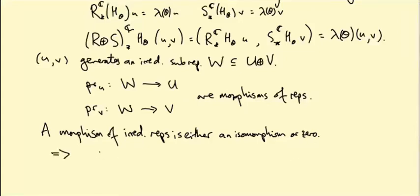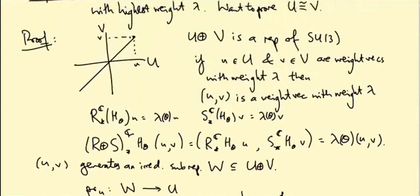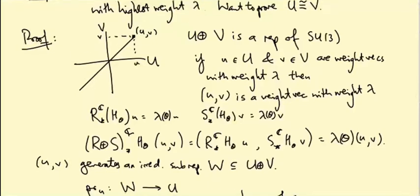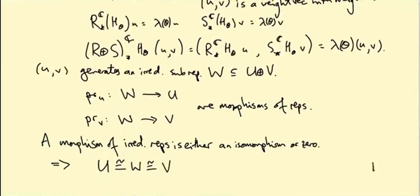So this tells us then that U is isomorphic to W is isomorphic to V, right? Both of these maps are isomorphisms. So in particular, U and V are both isomorphic to W. How do we know they're not zero? Well, because we've got this map, this point (u, v), that maps non-trivially to U and non-trivially to V, so the map can't just be zero. Okay, so this actually completes the proof. So this is basically Schur's lemma at the end.